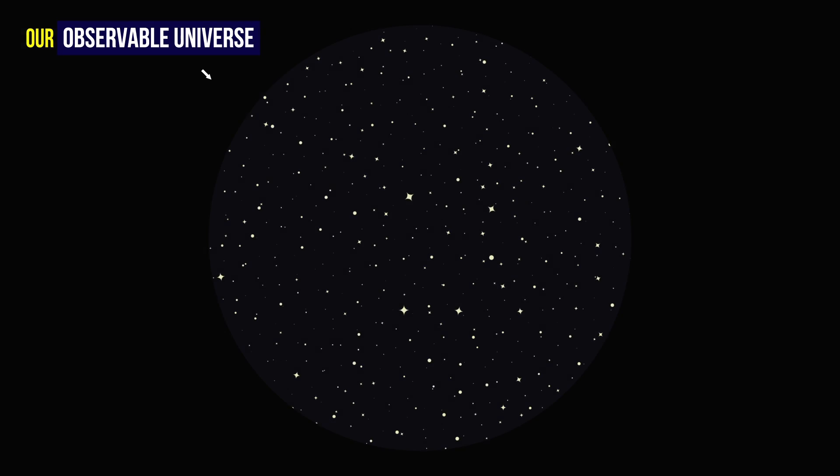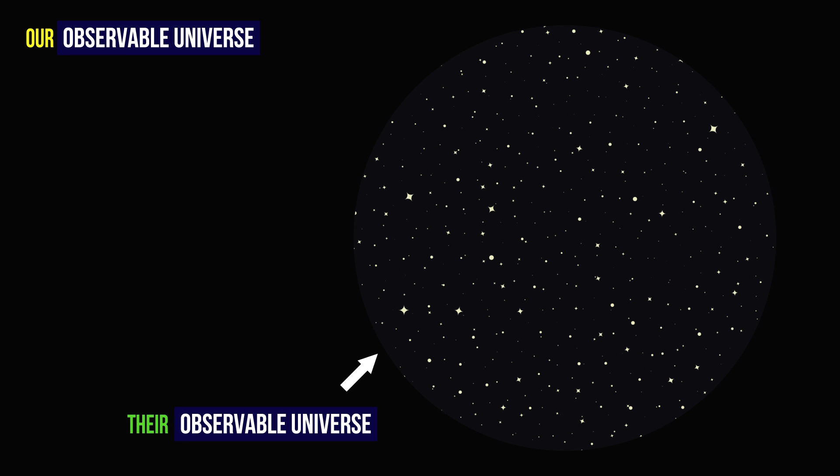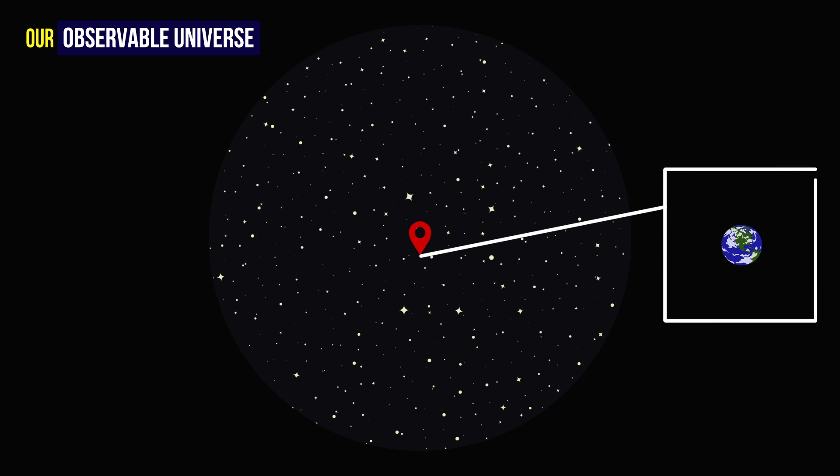We say our and not the observable universe because the part of space that can be observed depends on the position of the observer. In our case, our position is the Earth, which in a way means we're the center of the universe. Well, our observable universe, at least.